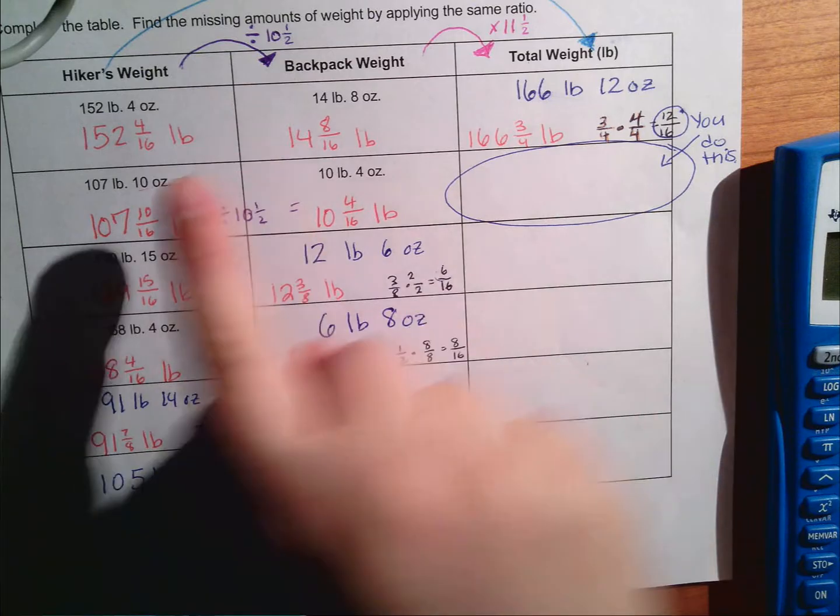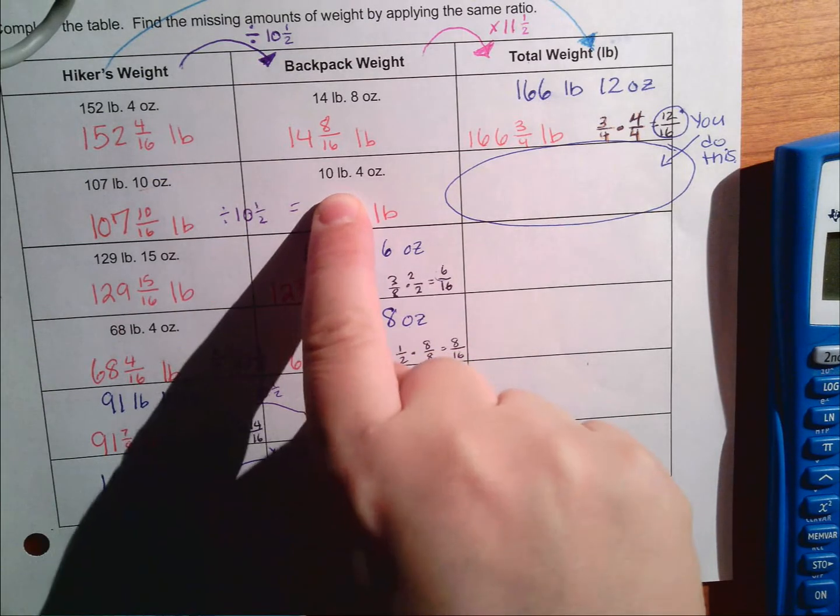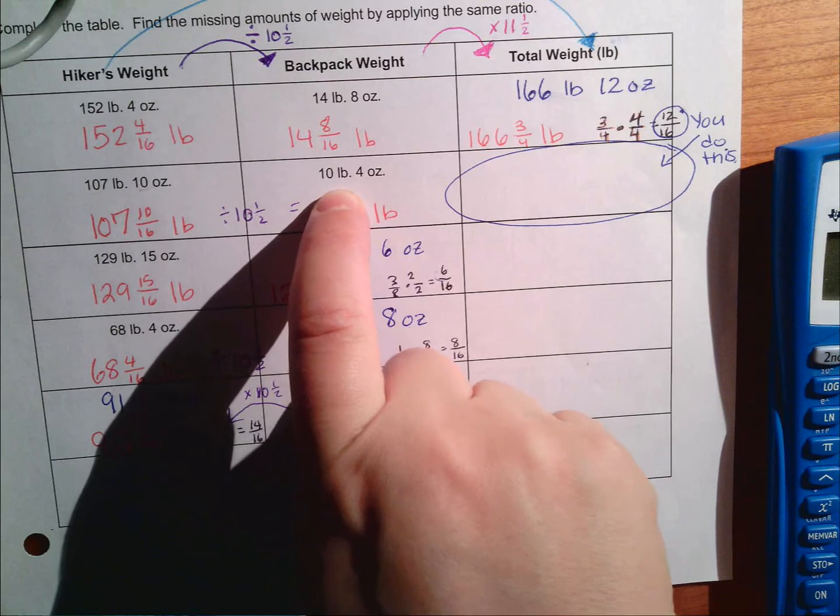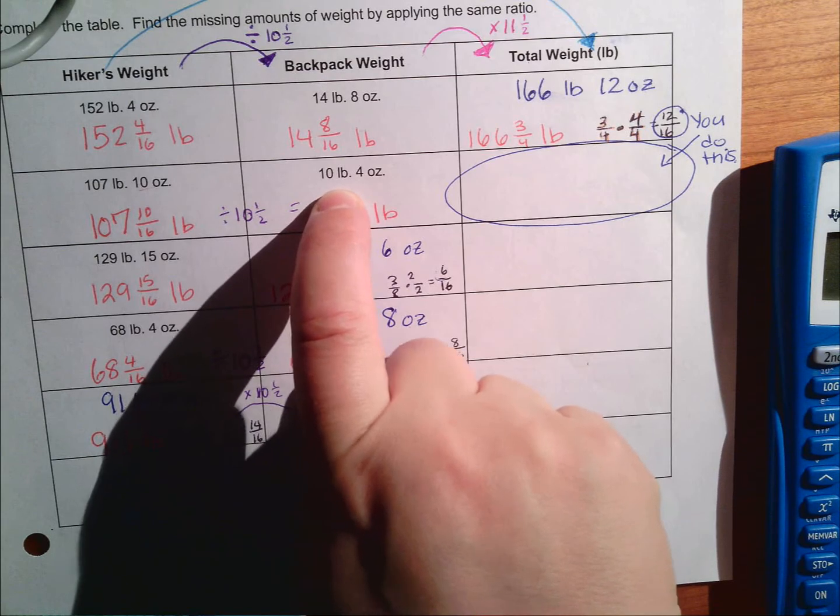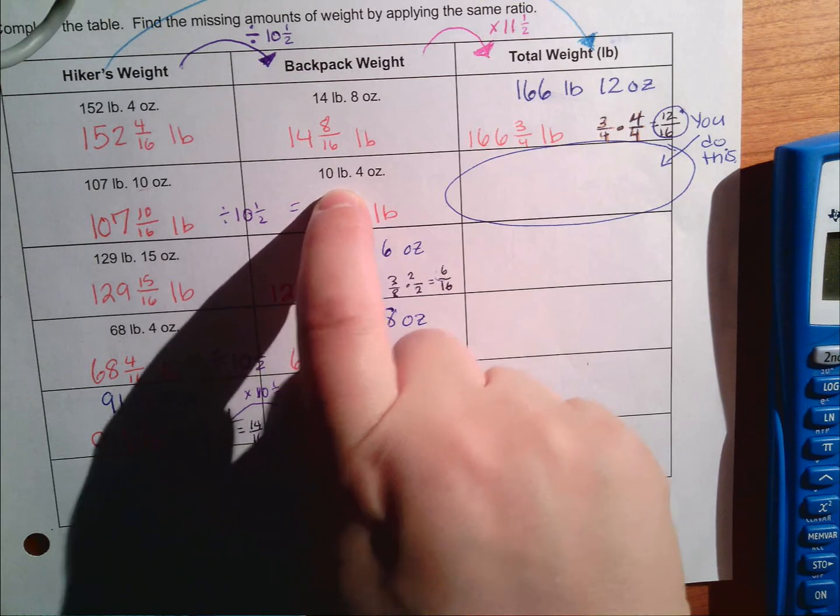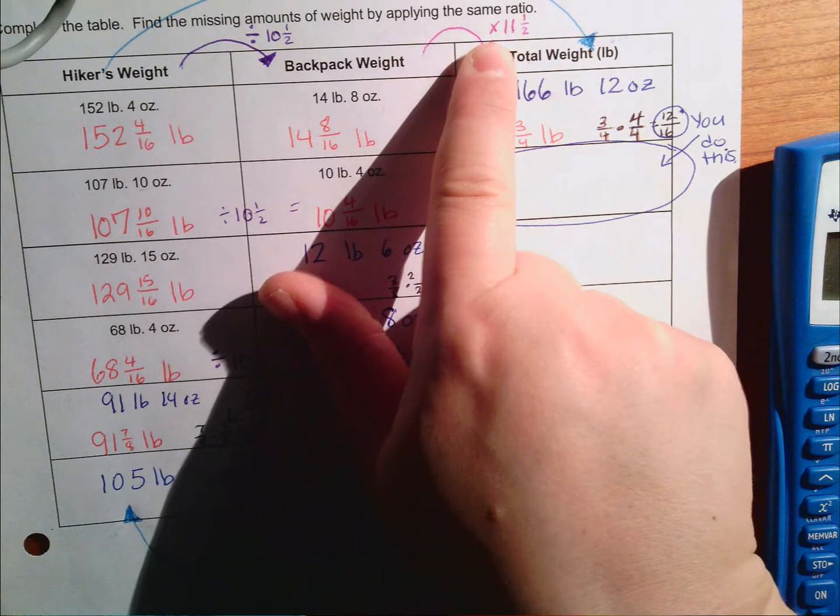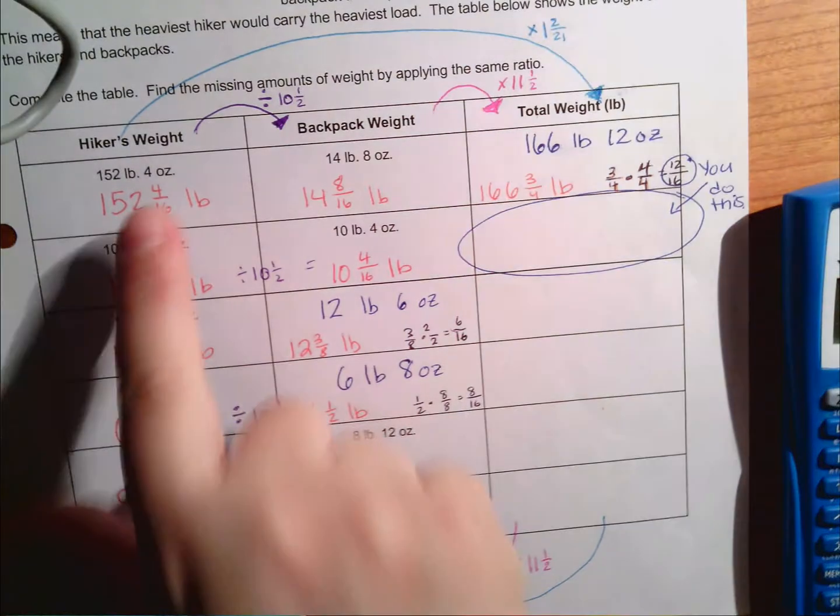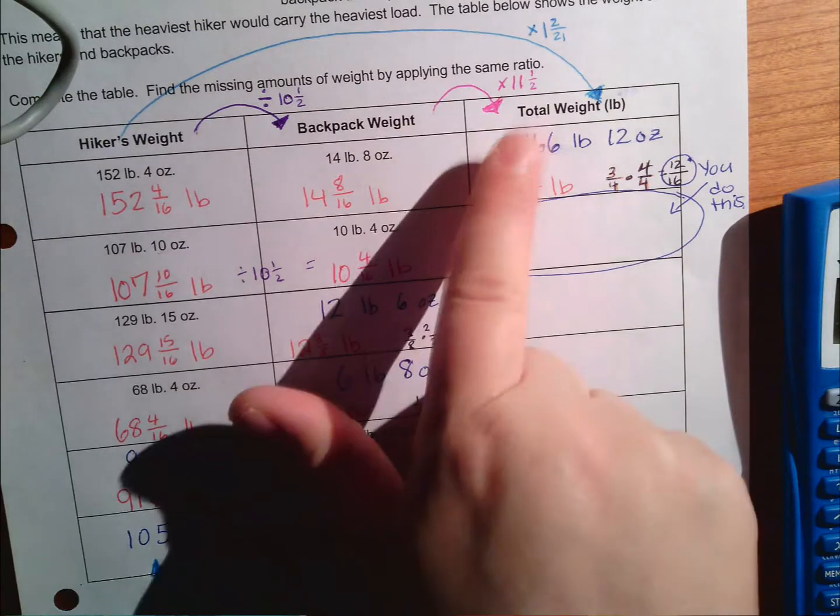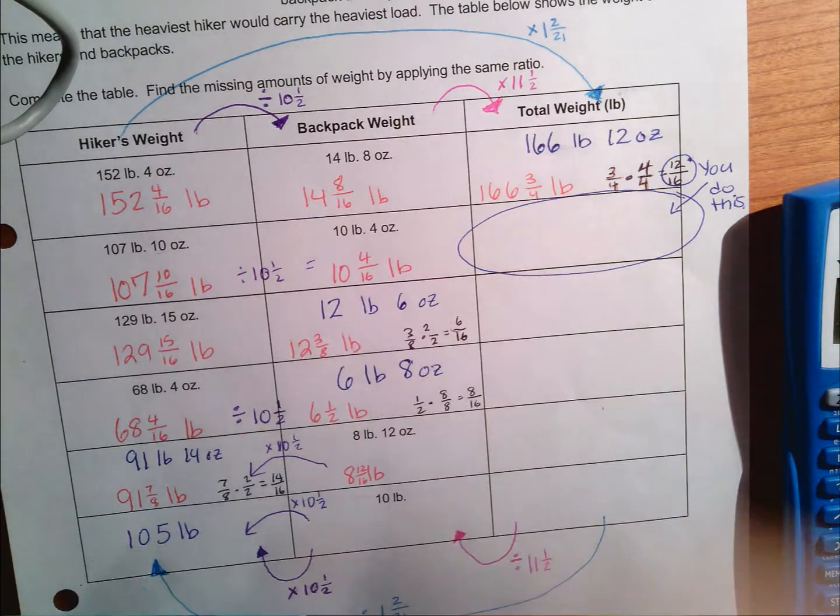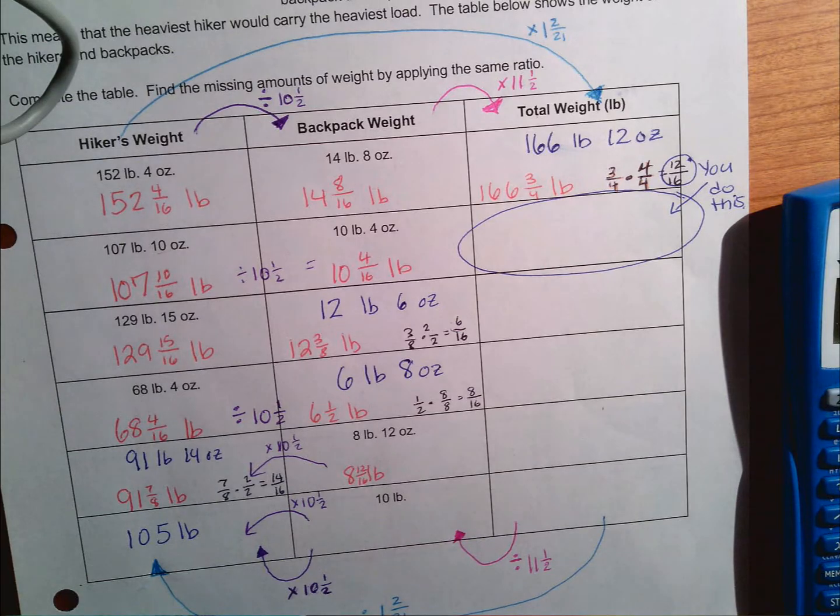I could add these two numbers together, which will probably be my most straightforward strategy using skills I already know. Or if I want to spice it up a little bit, I could either take my backpack weight and multiply by eleven and a half, or I could take my hiker's weight and multiply by one and two twenty-firsts. If I do any of these, I should end up with the same number.